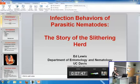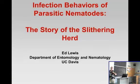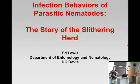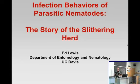How do they choose one host over another one? This has a lot to do with their behavior and their life history, though there's also an overlay of environmental conditions that I won't get into today. The slithering part is pretty obvious if you've ever seen a nematode move, but the herd part I'll get to in a little while, and hopefully that'll make sense by the time we finish here.